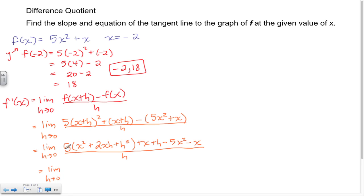Now see, limit as h approaches 0, let's distribute this 5 to each term. So here I have 5x squared plus 10xh plus 5h squared plus x plus h minus 5x squared minus x, where all that here again is divided by h.